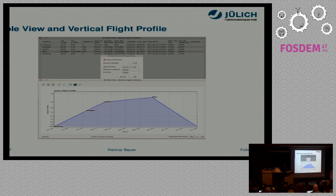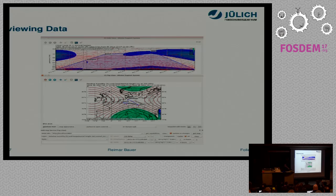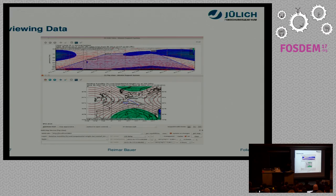In the side view, you see how the aircraft should fly in altitude. You see this also in the table view as coordinates and time. You can request new data for different species from a pull-down menu or at a different pressure level. The whole height is based on pressure because aircraft like to fly on pressure levels.